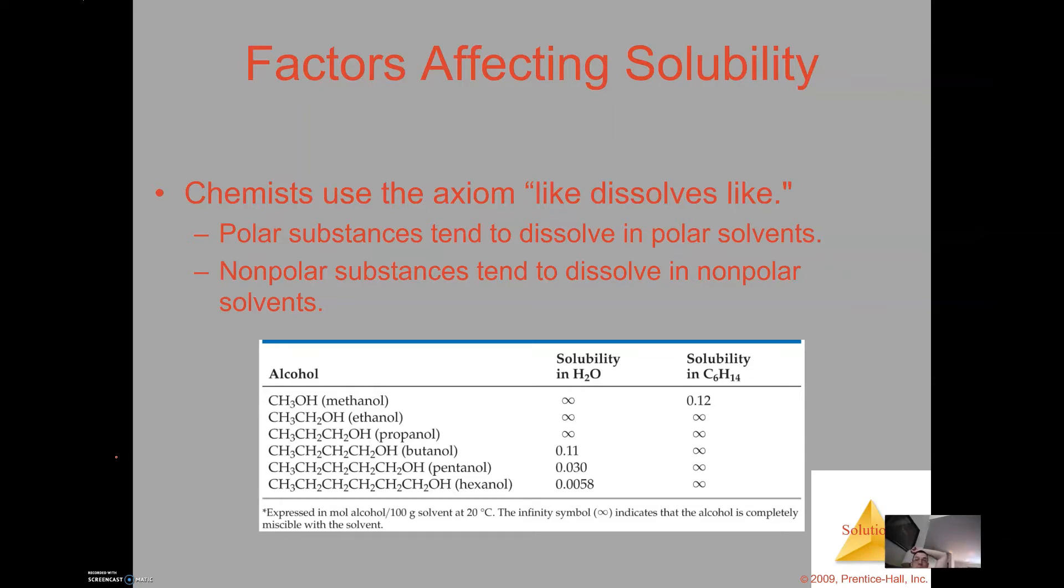Now as we move up into the number of carbons in the chain we see ethanol has two carbons. Ethanol still is soluble in water but what happens here is that now we've got a little bit more of a nonpolar side to it with those two carbons in that chain and so that makes it very soluble in hexane.